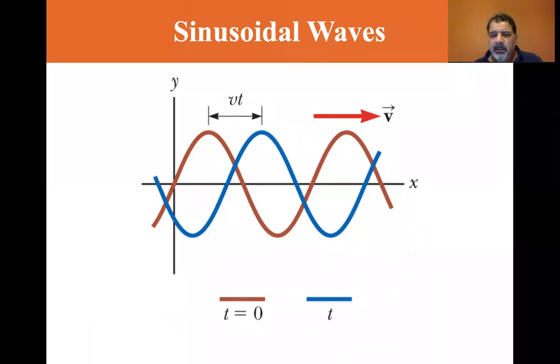So you can see that the wave has traveled, the velocity of the wave times t, it's traveled at t equals zero. It's the brown wave at t, the velocity of the wave propagation times t, that gives you how far it's gone.